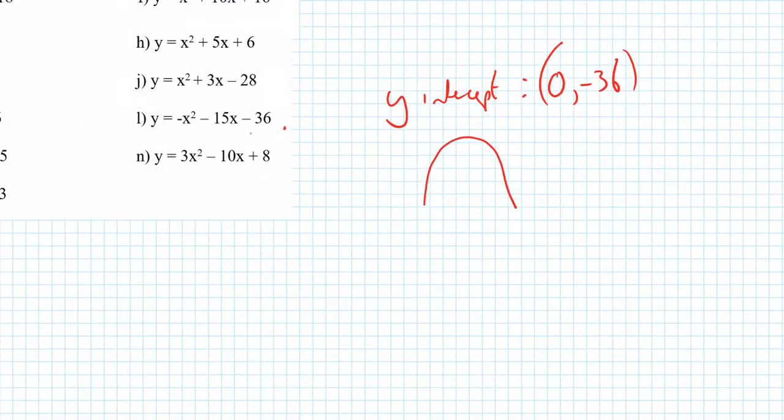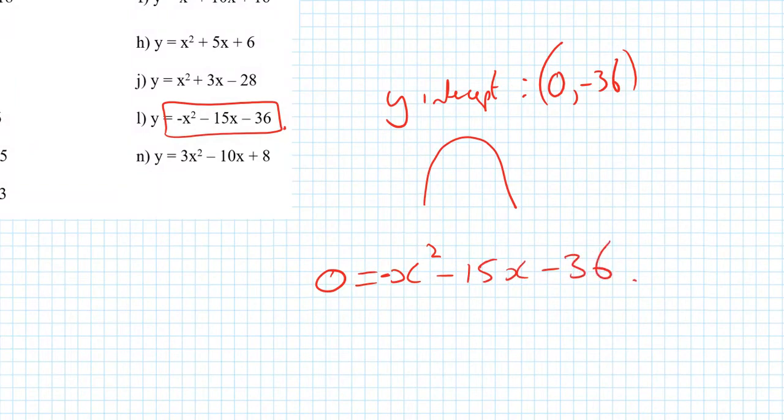Next thing to do is to solve the equation equal to 0 to find the x intercepts. So we're going to be solving 0 equals x minus x squared minus 15x minus 36.